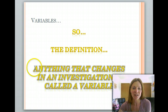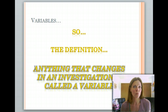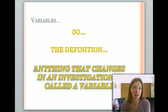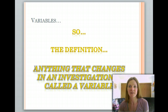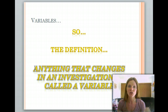Anything that changes in an investigation is called a variable. Say you want to see how well a plant grows depending on how much sunlight you give that plant — you have plants indoors, plants outdoors, plants in the shade, and plants directly in the sun. You have all these different changing things — those are the variables.